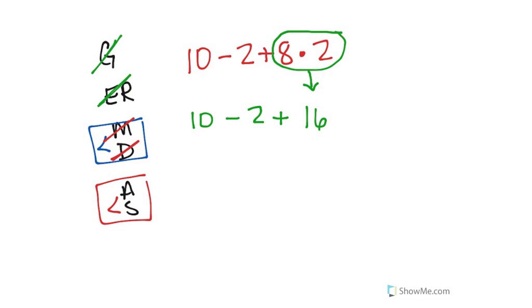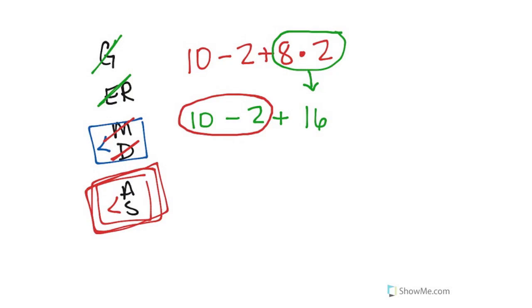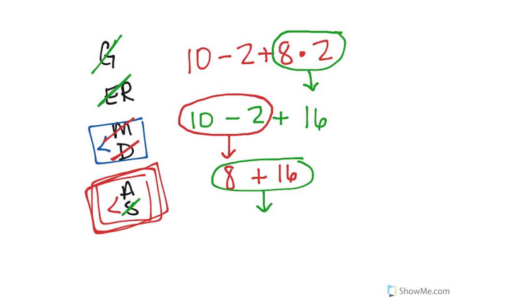Pay attention to this step. My next step is addition or subtraction, whichever you see first — the homies have each other's back. What do you see first — addition or subtraction? I see subtraction first, so circle it. 10 minus 2 is 8. Bring down what you haven't used: the plus and the 16. Then obviously you already did subtraction, so now you're going to use addition. 8 plus 16 gives me 24. That is my final answer.